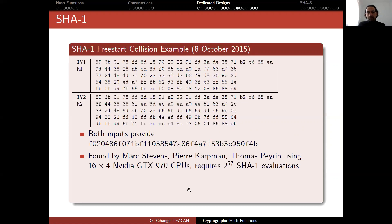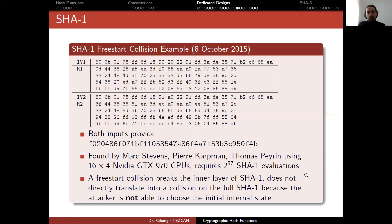This was found by Marc Stevens, Pierre Karpman, and Thomas Peyrin, using 64 NVIDIA GTX GPUs. They performed around 2 to the 57 SHA-1 evaluations.